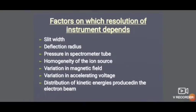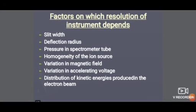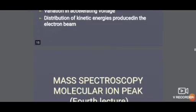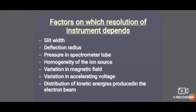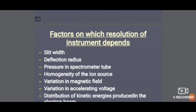The factors on which the resolution of the instrument depends are: first, slit width; second, deflection radius; third, pressure in the spectrometer tube; fourth, homogeneity of the ion source; fifth, variation in the magnetic field; sixth, variation in accelerating voltage; and seventh, distribution of kinetic energy produced in the electron beam. These are the factors which affect the resolution of the instrument.